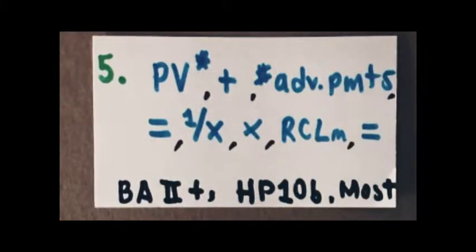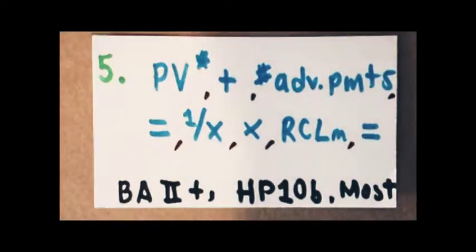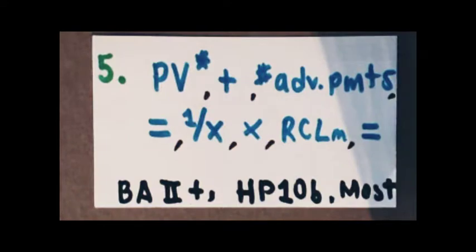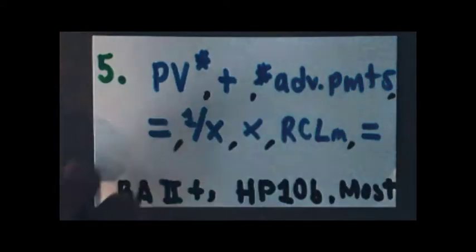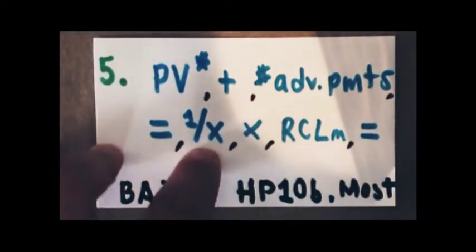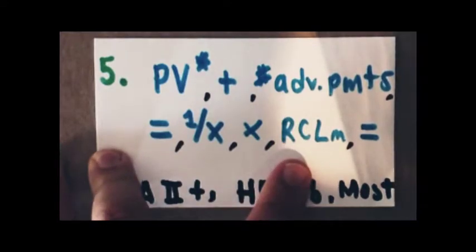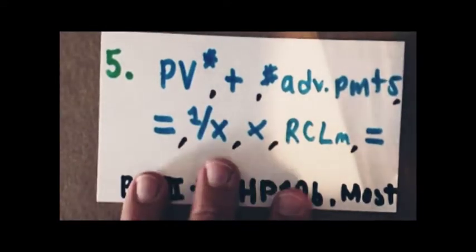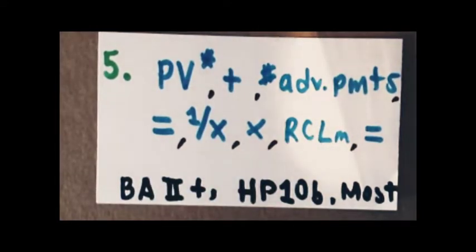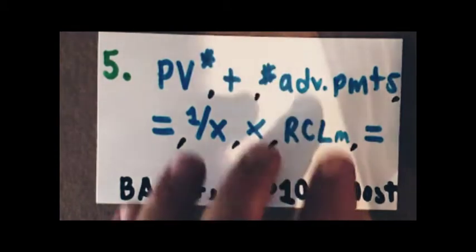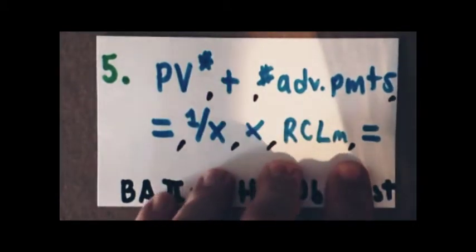Take the present value calculated from step 4, add A — the number of advanced payments — hit the equals key, then hit the reciprocal key and multiply that times whatever you have stored in step 3, then hit the equals key, and you will get your monthly lease payment.